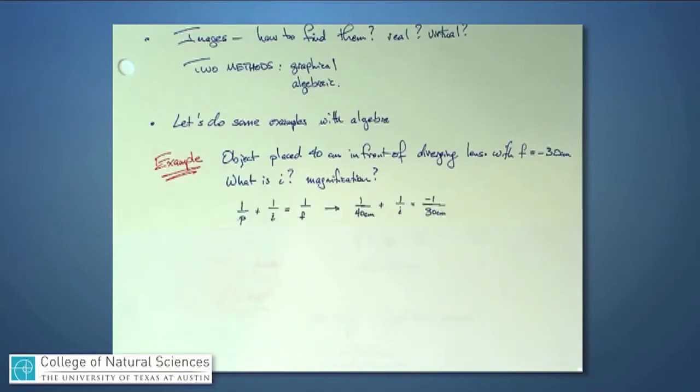This would again require us to go back to our expression 1 over p plus 1 over i equals 1 over f and start to put in numbers for those things that we know with the correct signs. We are told that the object is placed 40 centimeters in front of the diverging lens, so p is 40 centimeters, and it's a positive number because object distances are always positive. We don't know i; in fact, that's the thing we would like to know, so we're going to leave it as is. And the focal length, 1 over f here, well, that's being told to us is negative 30 centimeters, so we're putting minus 1 over 30, or you could say 1 over minus 30 centimeters. It's the same either way.